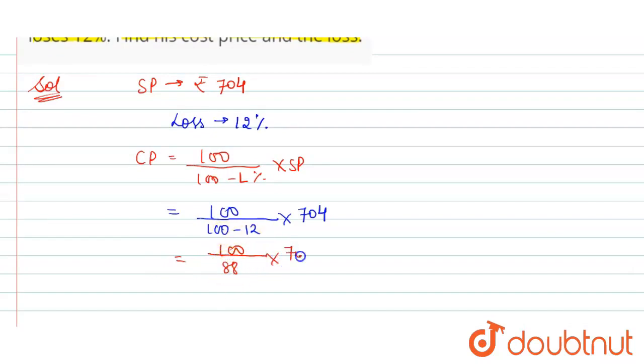So 704 divided by 88 is 8, and here 8 into 100 is 800. So our CP is rupees 800. CP is equals to rupees 800. This is first part.